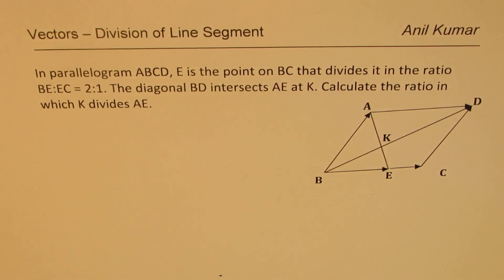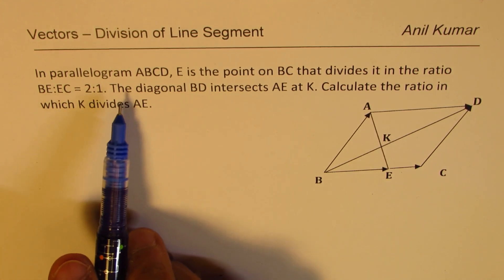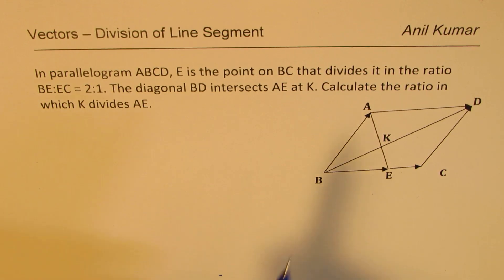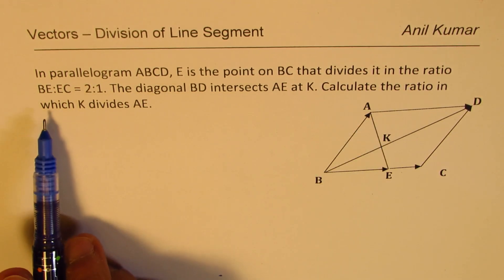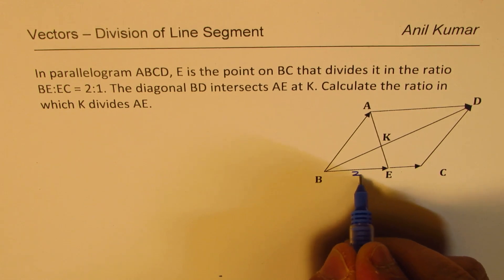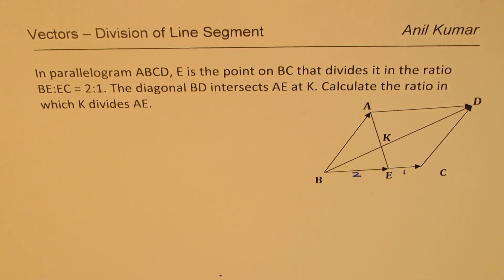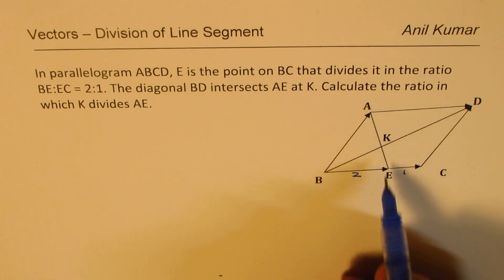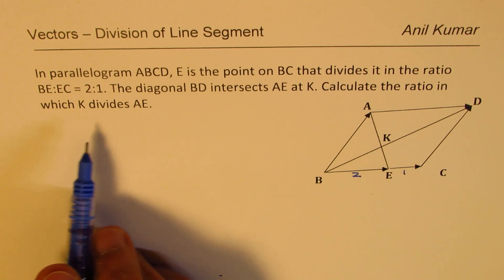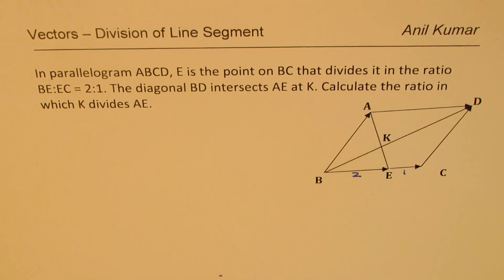We'll try to prove geometrical applications using vectors. The question here is, in parallelogram ABCD, E is a point on BC that divides it in the ratio BE to EC as 2 is to 1. The diagonal BD intersects AE at K. Calculate the ratio in which K divides AE. So that is the ratio which you need to find.